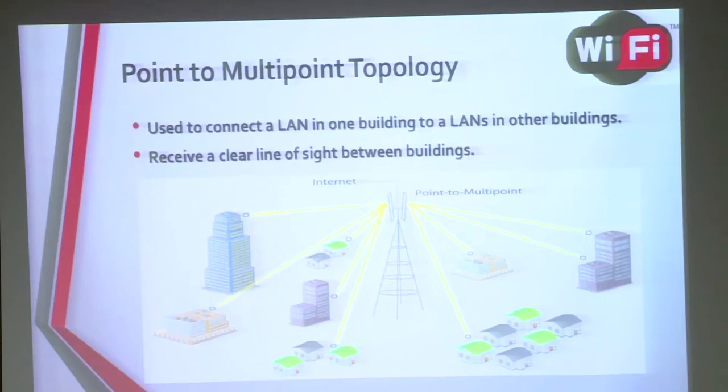Another mode is called point-to-multipoint. In point-to-multipoint mode, there is a central device that is responsible for providing services to the rest of the nodes. For example, a central device can be placed on a tower and from there it provides Wi-Fi services to certain locations — such as buildings and homes. This is what we call point-to-multipoint topology.